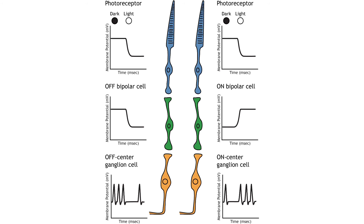Off- and on-bipolar cells synapse on off-center and on-center ganglion cells, respectively. Ganglion cells are the only cell type to send information out of the retina, and they are also the only cell that fires action potentials. The ganglion cells will fire in all lighting conditions, but it is the relative firing rate that encodes information about light. A move from dark to light will cause off-center ganglion cells to decrease their firing rate, and on-center ganglion cells to increase their firing rate.